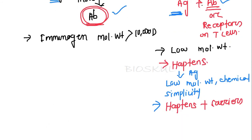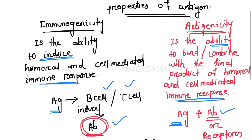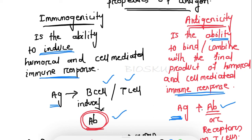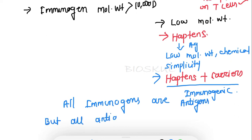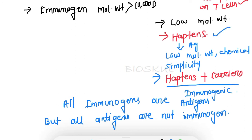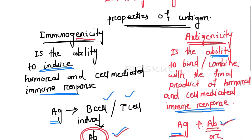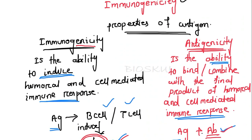When haptens combine with a carrier protein — which has a high molecular weight — then the haptens become immunogens and gain immunogenicity. So all immunogens are antigens, but not all antigens are immunogenic. Haptens, though antigens, are not immunogens unless they combine with a carrier protein. Hopefully, you now won't find it hard to distinguish between immunogenicity and antigenicity.